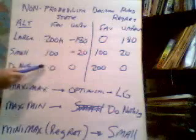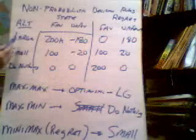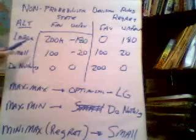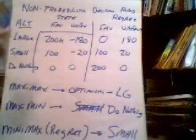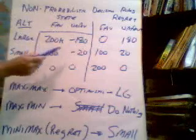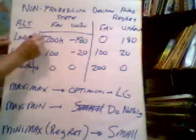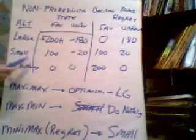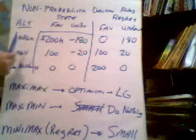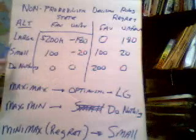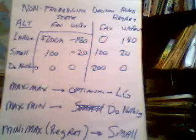In here we've got the payoffs. If we build a large plant and we have a favorable state, our profit is $200,000. If we build a large plant and it's an unfavorable market, we lose $180,000. Likewise, if we build a small plant and it's a favorable market, we earn $100,000 in profit. And if it's an unfavorable market, we lose $20,000. And if we do nothing, we don't gain or lose anything.